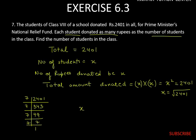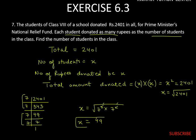So x equals the square root of 2,401, which can be written as 7 to the power 4, or 7 squared times 7 squared. Cancelling the square root with the square, you get 7 into 7, which is 49. So the number of students is 49.